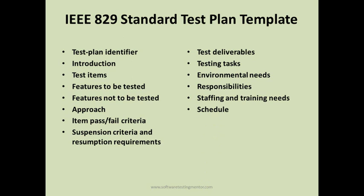The test plan also includes the schedule for the complete testing cycle — when each phase will start and finish, such as when functional testing or system testing begins and ends. Any risks and contingencies in the project are also documented. Finally, the approvals section specifies which stakeholders need to approve before the testing effort can proceed.